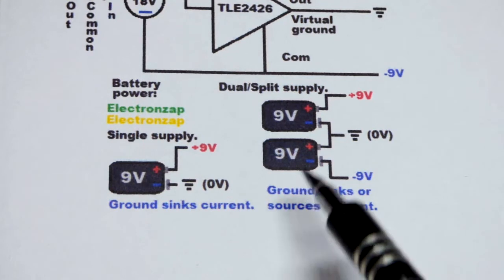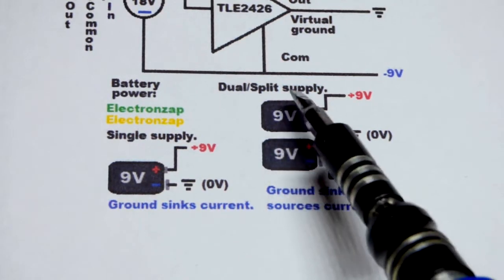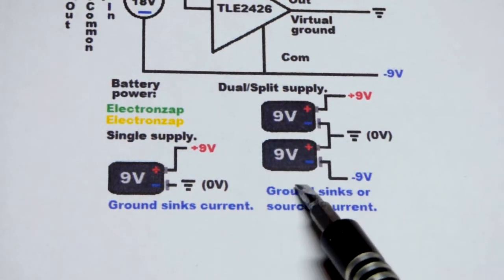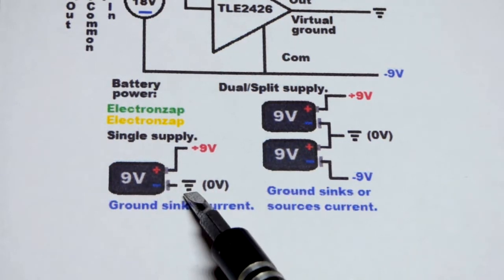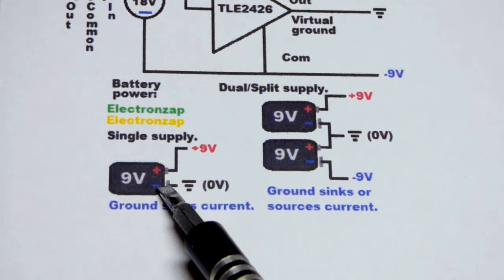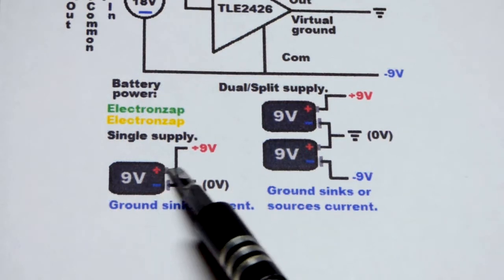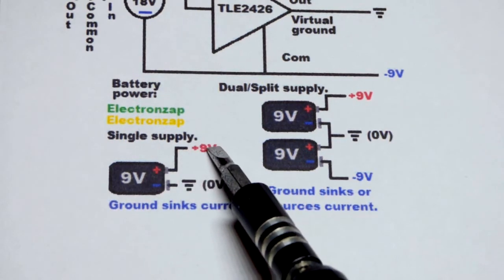And we did a longer video of the 9 volt battery, but we'll just do a refresher here. You can see that with a single 9 volt battery, we can get ground if we declare the negative side of the battery ground. And then the positive side of the battery, there's a 9 volt difference right there.